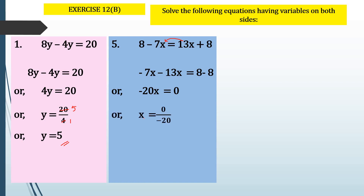Now we need x. So x is equal to 0 divided by minus 20. This minus 20 goes to the denominator, giving 0 upon minus 20. And 0 divided by any number gives us 0, so x is equal to 0. This is the required answer.